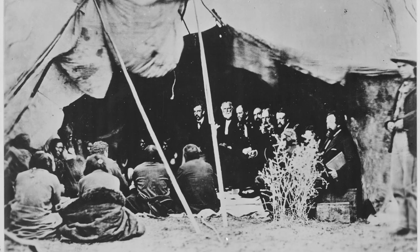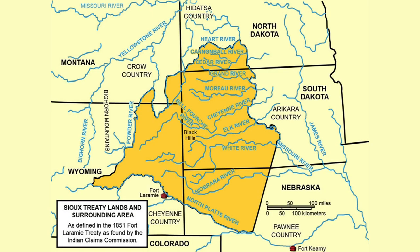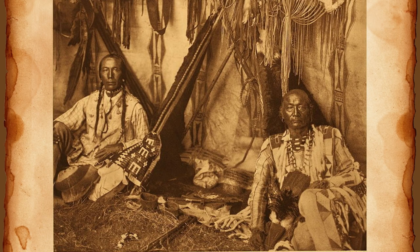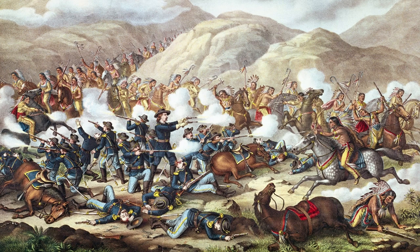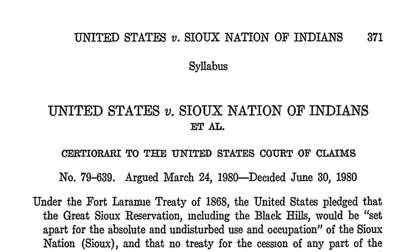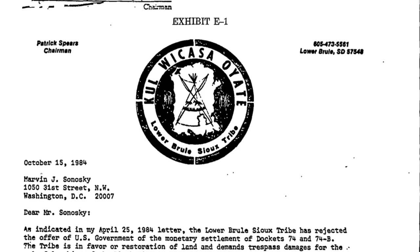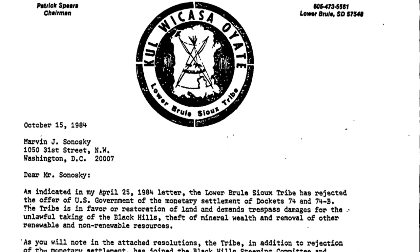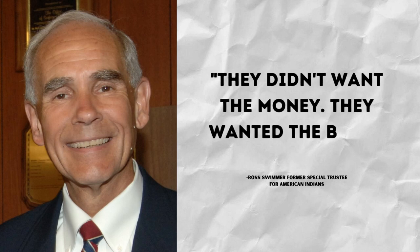Many more treaties would be signed, including the Fort Laramie Treaty in 1868. This treaty would designate the Black Hills of Dakota as the Great Sioux Reservation — exclusive territory of the Sioux, which included the Dakota, Lakota, Nakota, and Arapaho people. After gold was found in the Black Hills, more settlers moved in seeking their fortune. The native tribes would try to resist the violation of their treaty, but their resistance would end with the Battle of the Little Bighorn in 1876. Over 100 years later, in 1980, the Supreme Court agreed the land taken from the Sioux was wrongfully stolen and over $100 million was set aside as compensation. However, the Sioux continuously refused these reparations — worth over a billion dollars today — because taking the money was paramount to a sales transaction. As Ross Swimmer, former Special Trustee for American Indians put it, they didn't want the money; they wanted the Black Hills.